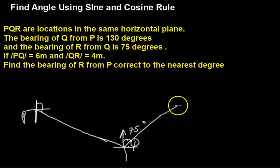Now, the question also says if PQ is 6 meters and QR is 4 meters. My question now says, find the bearing of R from P.